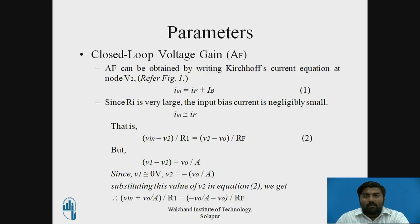Since the input resistance RI of the op-amp is much larger, the input bias current is negligibly small. So the equation becomes IN approximately equals IF. That is: (VIN minus V2) divided by R1 equals (V2 minus VO) divided by RF. We also know that V1 minus V2 equals VO divided by A, where A is the gain of the op-amp and VO is the output voltage.